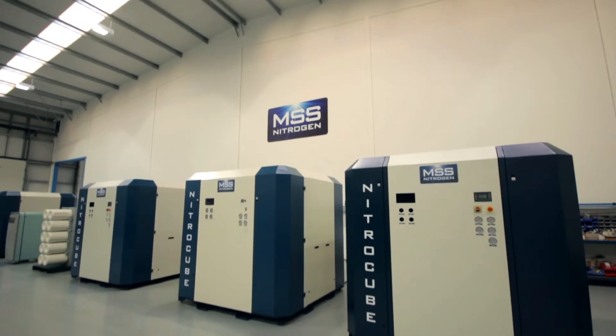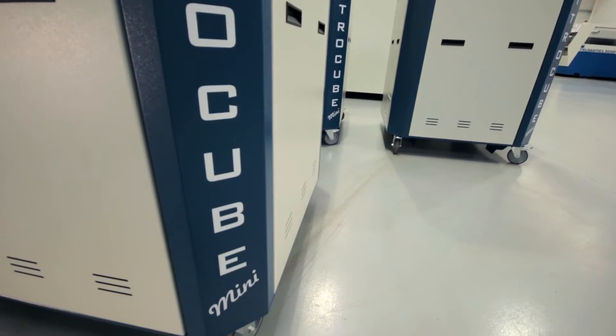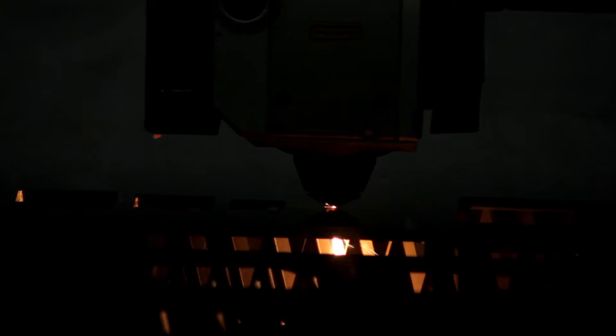In addition to our larger NitroCubes, we also offer the NitroCube Mini. This smaller unit is specifically designed for providing nitrogen to the beam path on high power laser cutting machines.